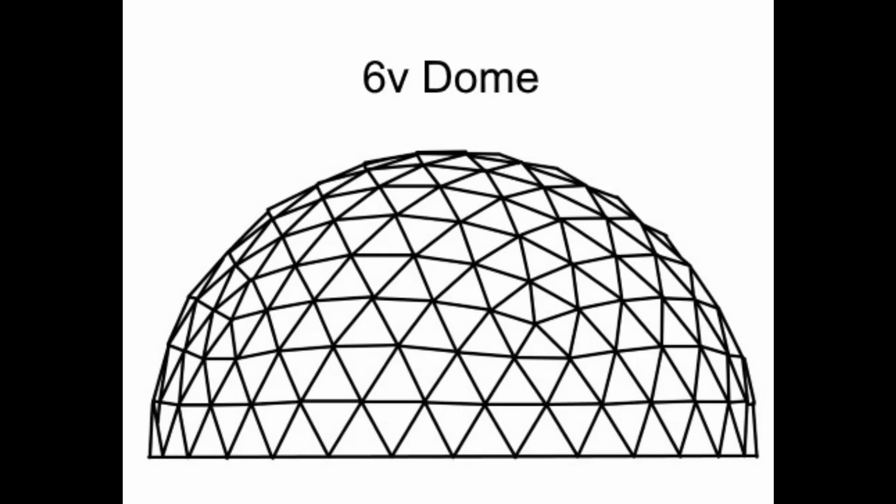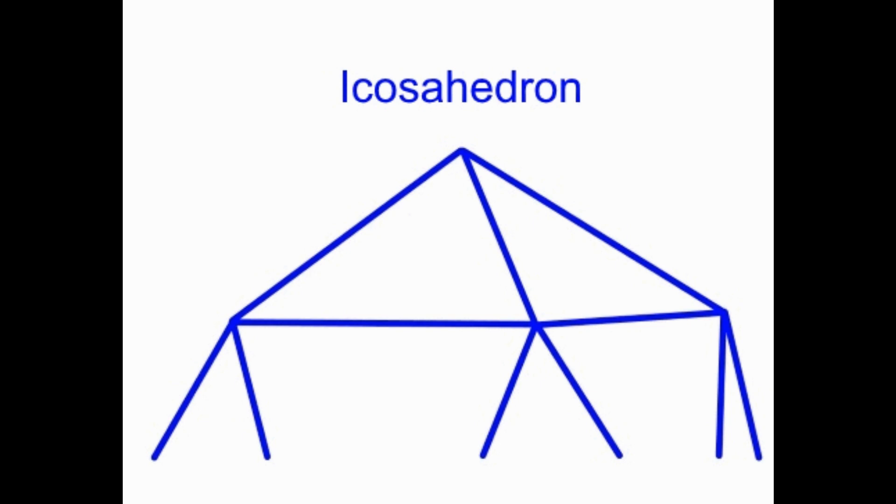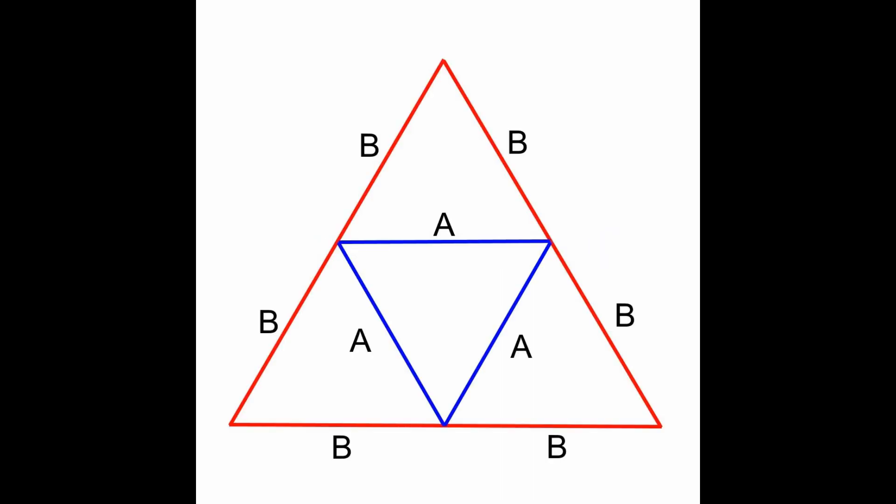This process causes the vertices to be pushed outward into a sphere. The edges or struts on the outside of the tessellated triangles are always shorter than those in the middle. In this 2 frequency example, the red B struts on the outside of the triangle are only 88% of the length of the blue A struts on the inside. For a 16-foot geodesic dome, the red struts would be 4 feet 5 inches, while the blue struts would be 5 feet in length. This difference causes the triangle to curve in 3 dimensions.